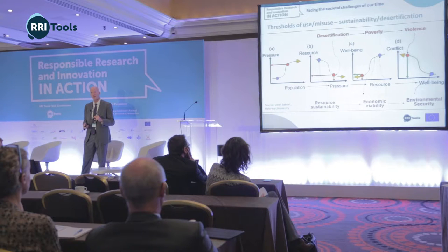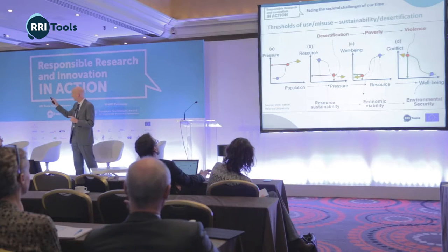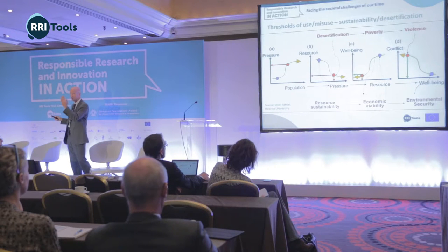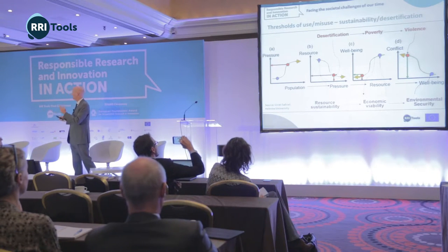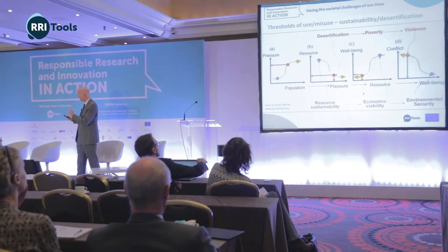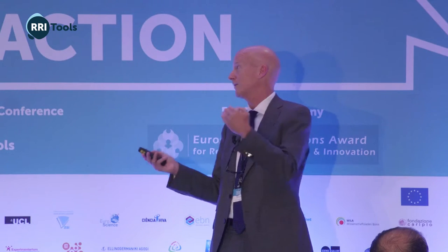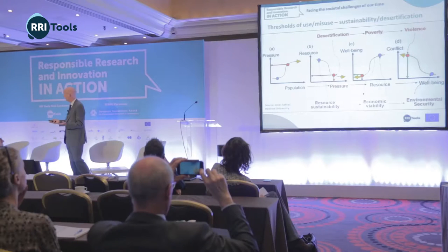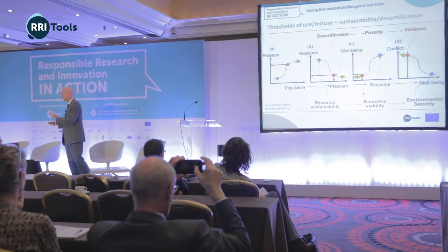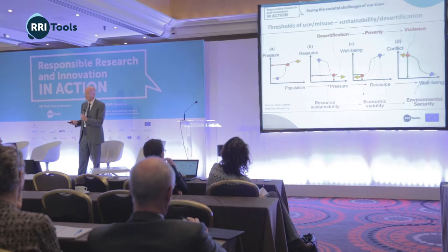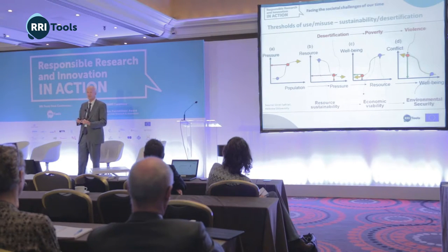In each successive graph, what's on the y-axis becomes on the x-axis. Population and the pressures on resources, when mapped against resources, give you a sense of the land degradation, desertification, and resource sustainability issues — which can then be mapped against human well-being, our goal. That degradation reduces human well-being, and when mapped against conflict, we see an increase. Many of the conflicts in the world today have exacerbating elements associated with land degradation and climate change.